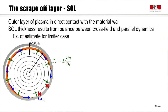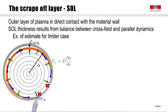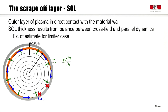Let's consider the scrape-off layer, or SOL — the outer layer of plasma in direct contact with the material wall. It plays a very important role because it determines the effect of the plasma on the wall itself and influences plasma core behavior in some circumstances. The thickness of the SOL results from a balance between cross-field and parallel dynamics, and we can estimate it for a simple case of a limiter configuration in a circular plasma.